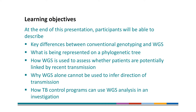At the end of this presentation, participants will be able to describe key differences between conventional genotyping and WGS, what is being represented on a phylogenetic tree, how WGS is used to assess whether patients are potentially linked by recent transmission, why WGS alone cannot be used to infer direction of transmission, and how TB control programs can use WGS analysis in an investigation.